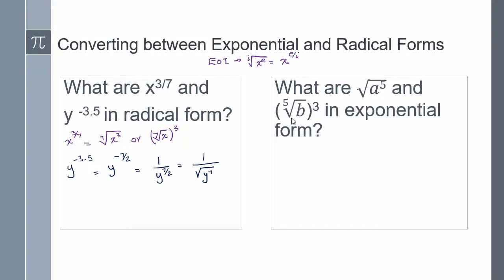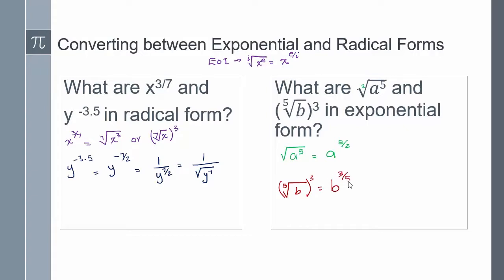In these examples, we're taking radical form and changing it into exponential form. The exponent inside the radical becomes the numerator, and the index becomes the denominator. So the square root of a to the power of 5 can be written as a to the power of 5 halves. The fifth root of b raised to the power of 3 means it is b to the power of 3 over 5, where 3 is the exponent and 5 is the index.